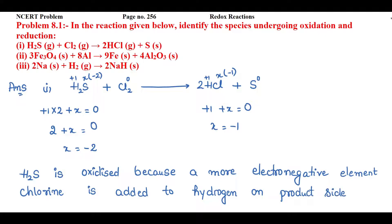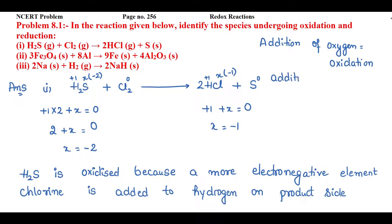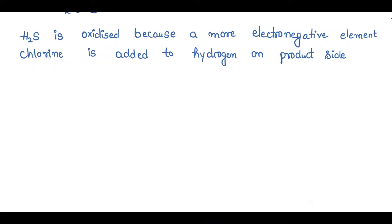Addition of oxygen always causes oxidation and addition of hydrogen always causes reduction. Chlorine is having hydrogen on the product side, so chlorine will be reduced. Chlorine is reduced due to the addition of hydrogen.